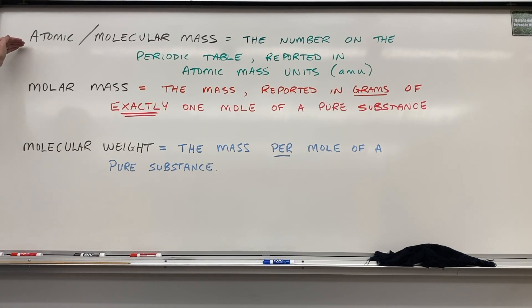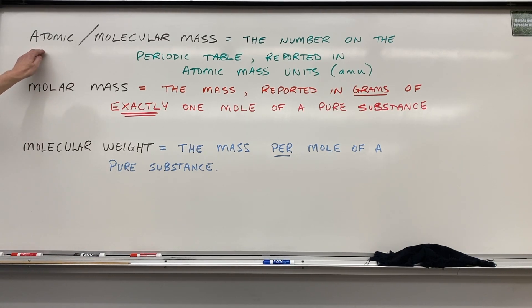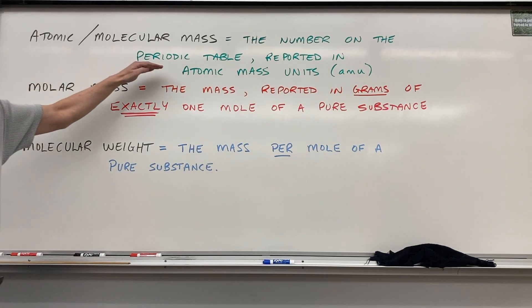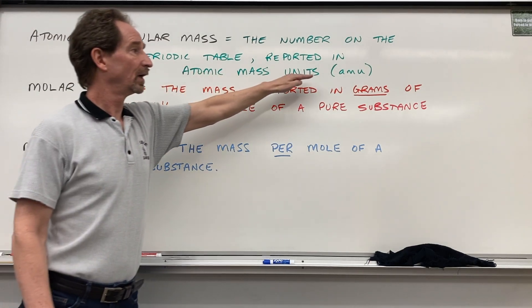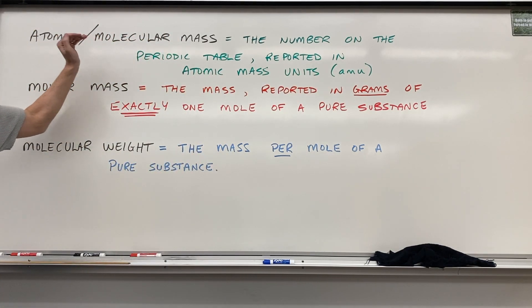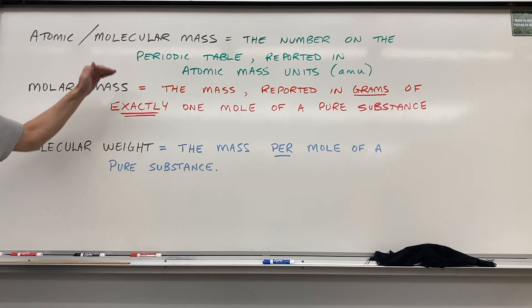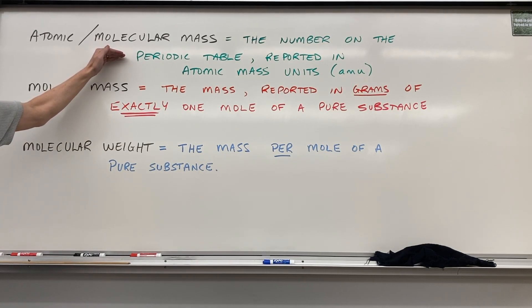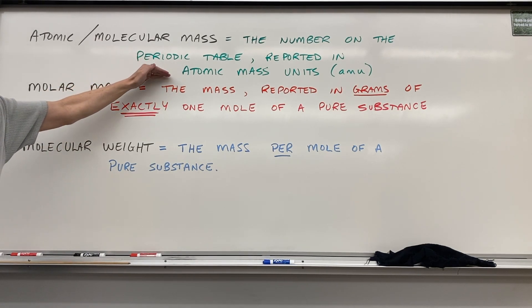The first is atomic or molecular mass. This is the number on the periodic table. We can look at the table and directly report the atomic mass in atomic mass units or AMUs. If it's a molecular mass we have a little bit more work to do, but we are simply pulling the number off the table and then writing atomic mass unit.